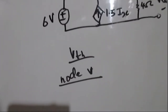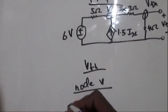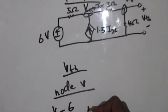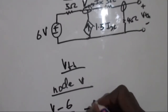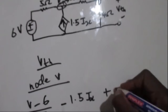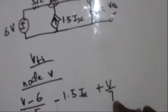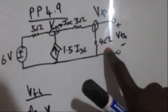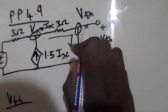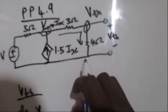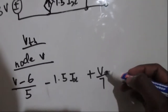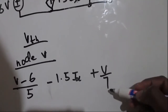At node V, we have (V − 6) / 5, then minus 1.5·ix, then plus V / 7. The 7 comes from 3 + 4, since current flows that way and none in the other direction. So all of that voltage between that point and ground gives us V / 7.